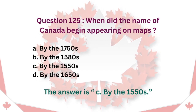Question 125: When did the name of Canada begin appearing on maps? A. By the 1750s. B. By the 1580s. C. By the 1550s. D. By the 1650s. The answer is C. By the 1550s.